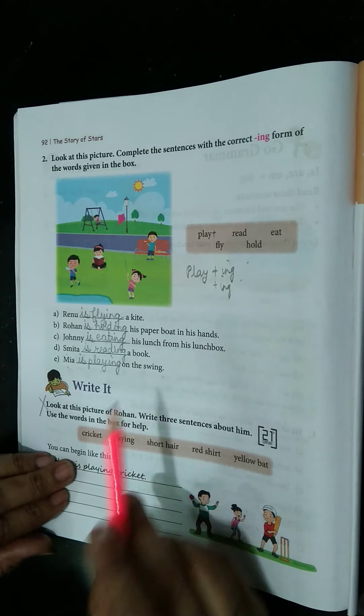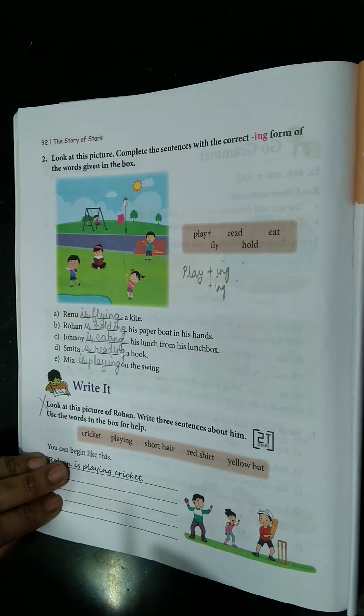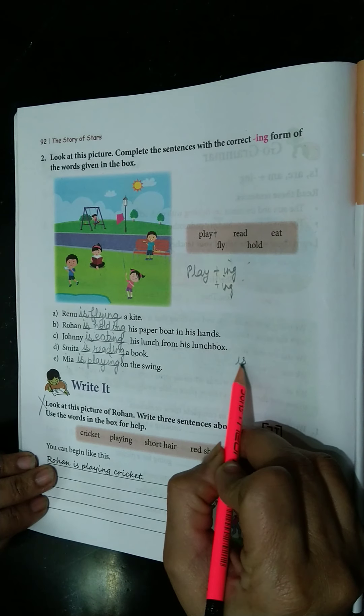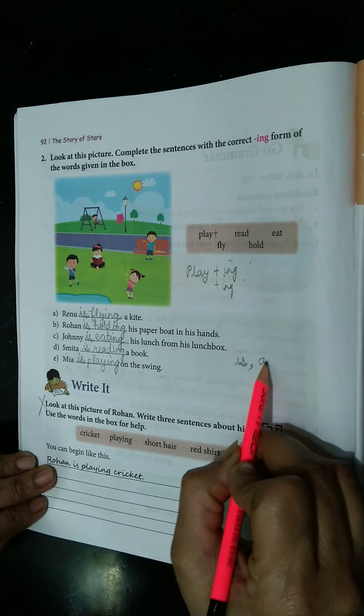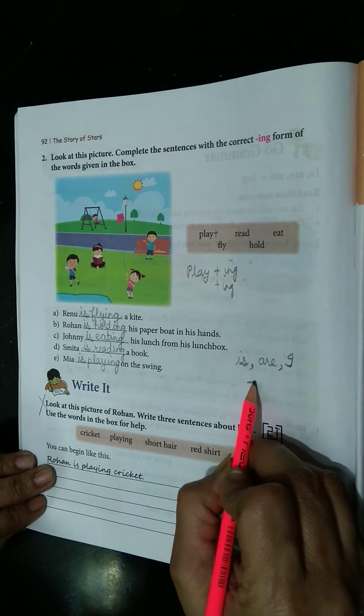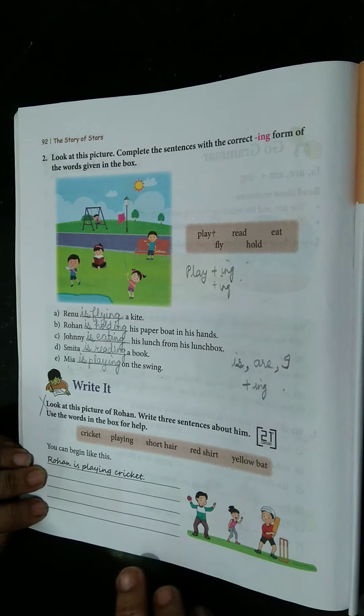So do these exercises in your book, and please revise it at least once so you could understand where we are going to use is, then are, and I and plus ing. Okay, thank you so much.